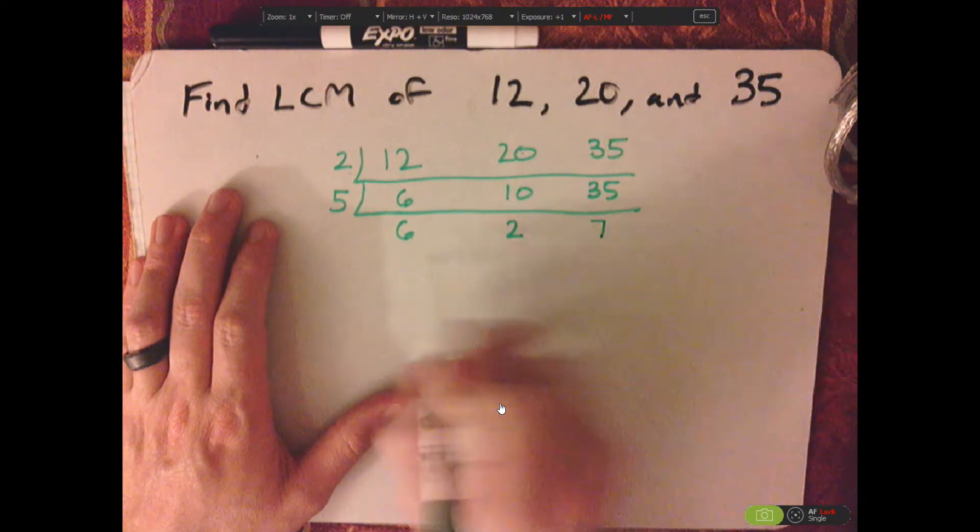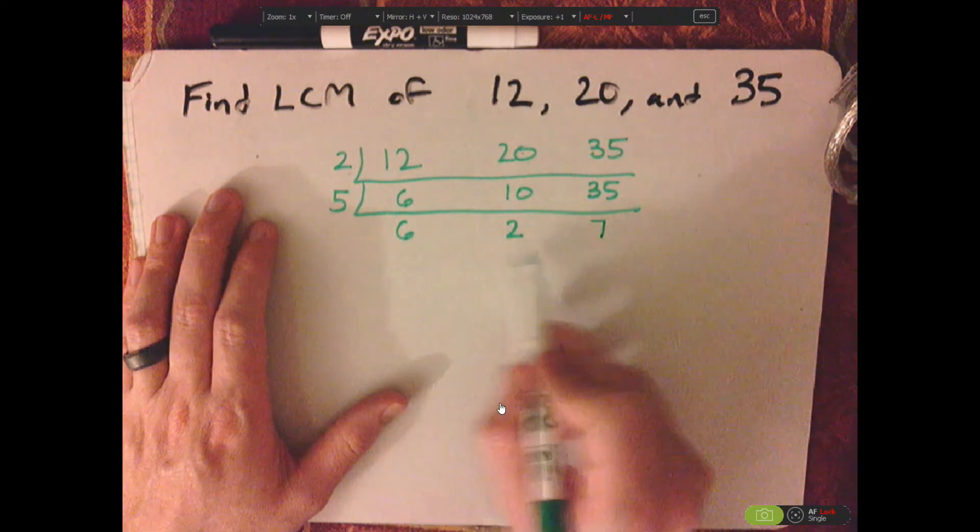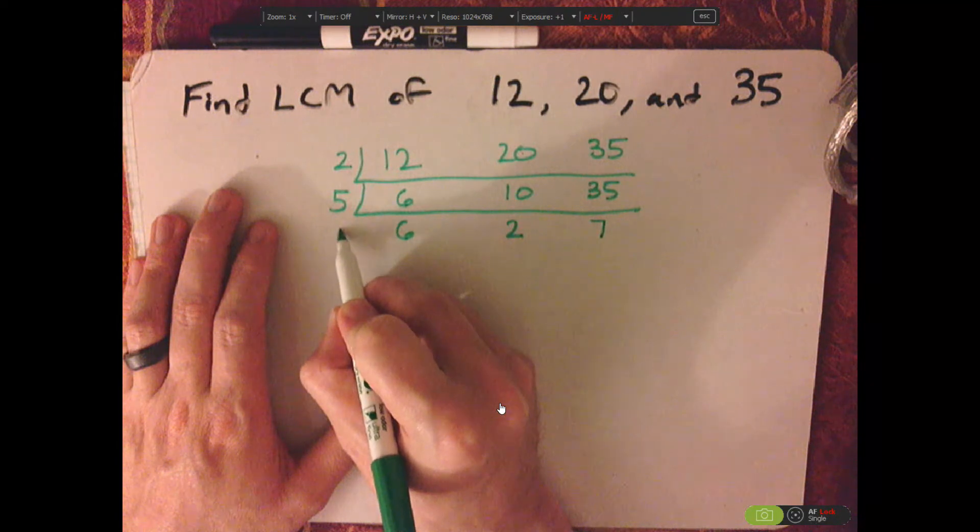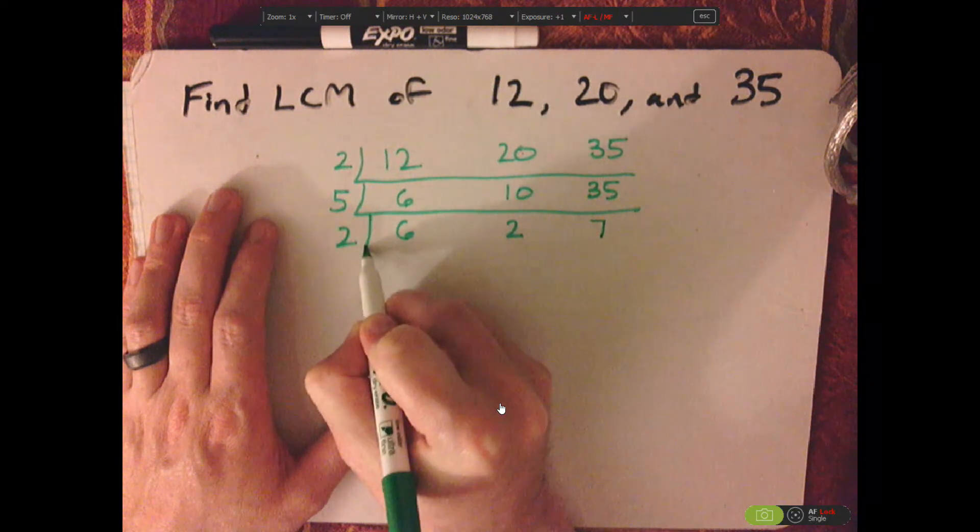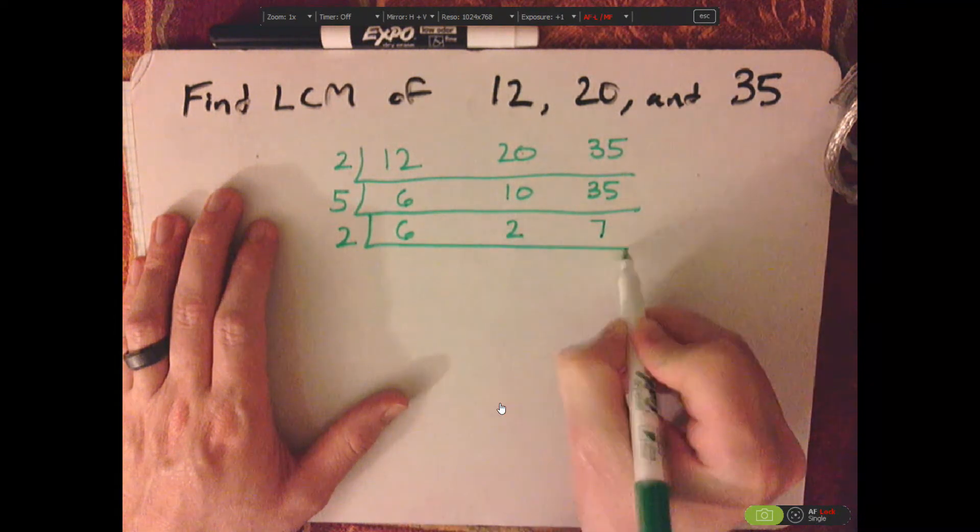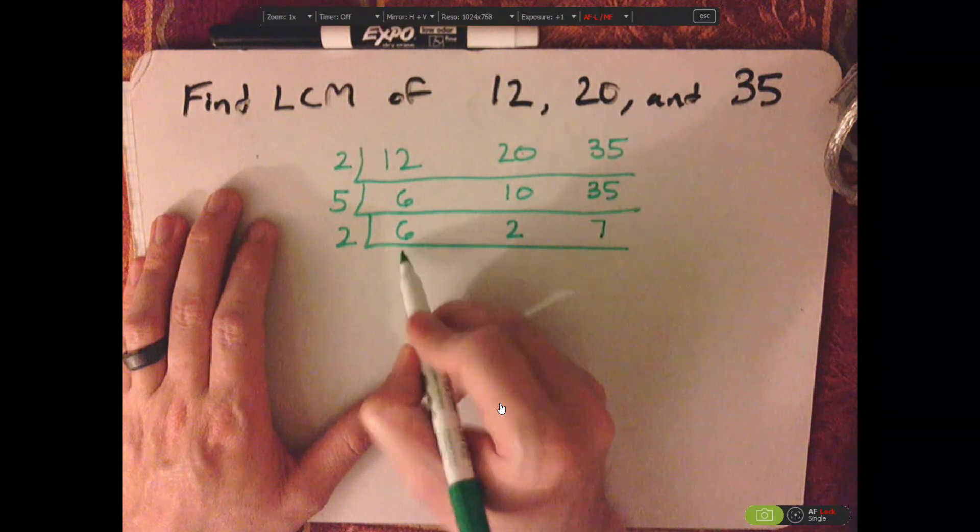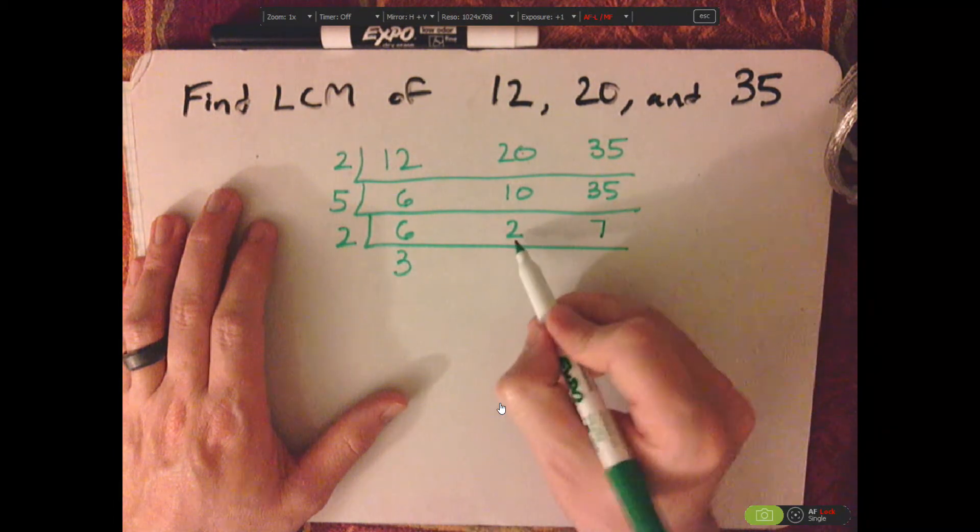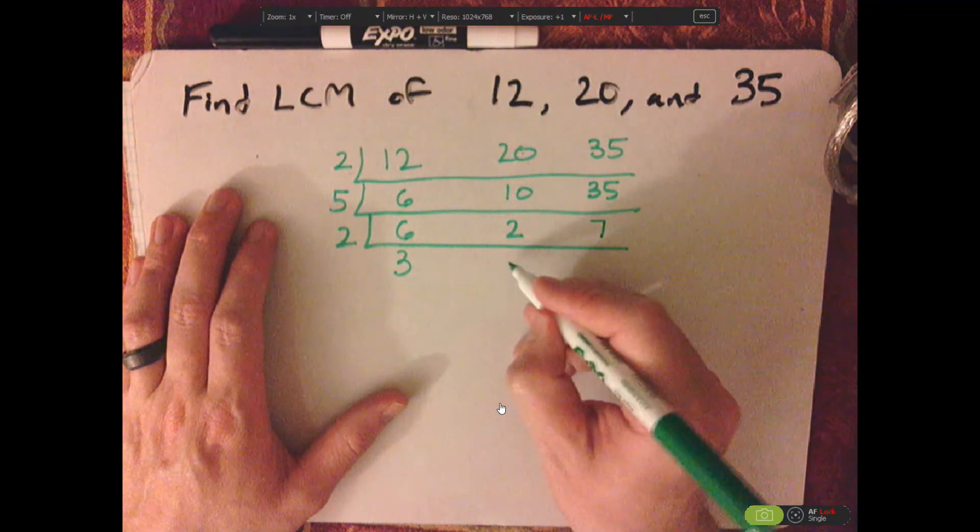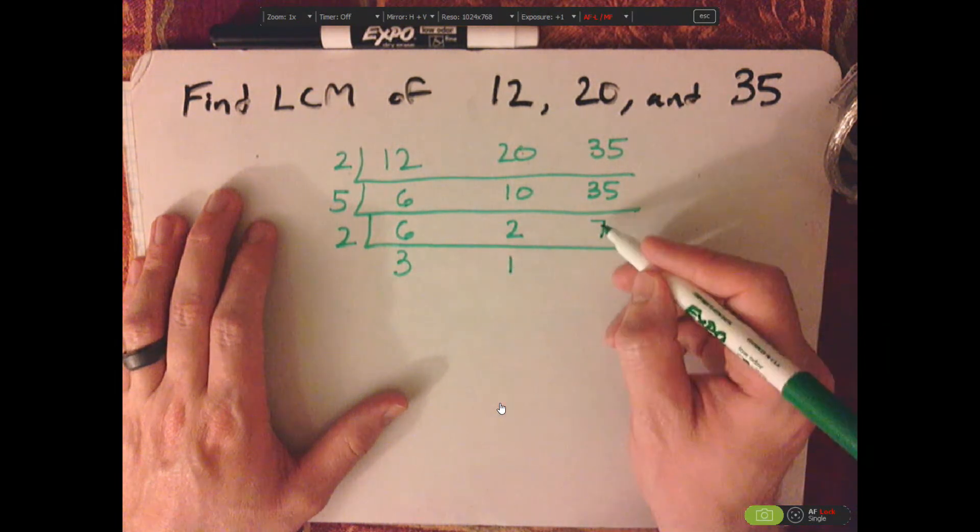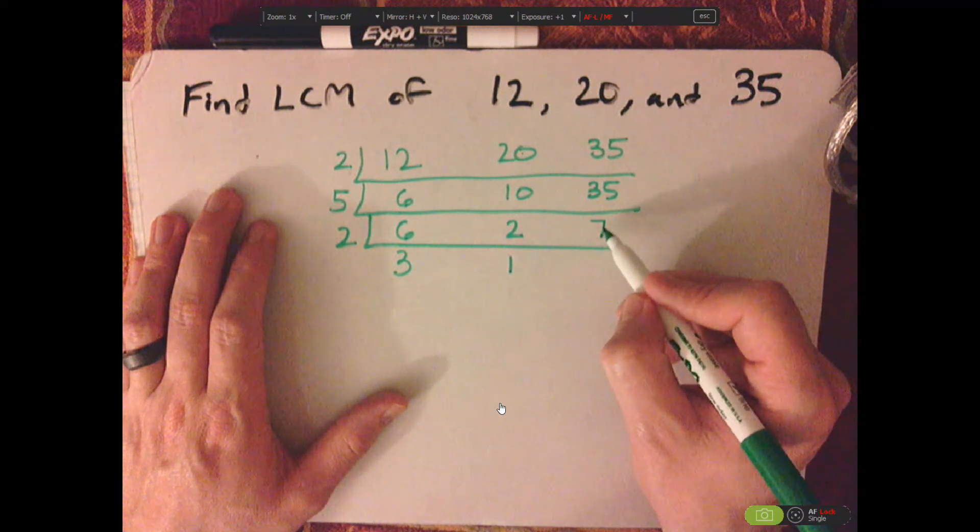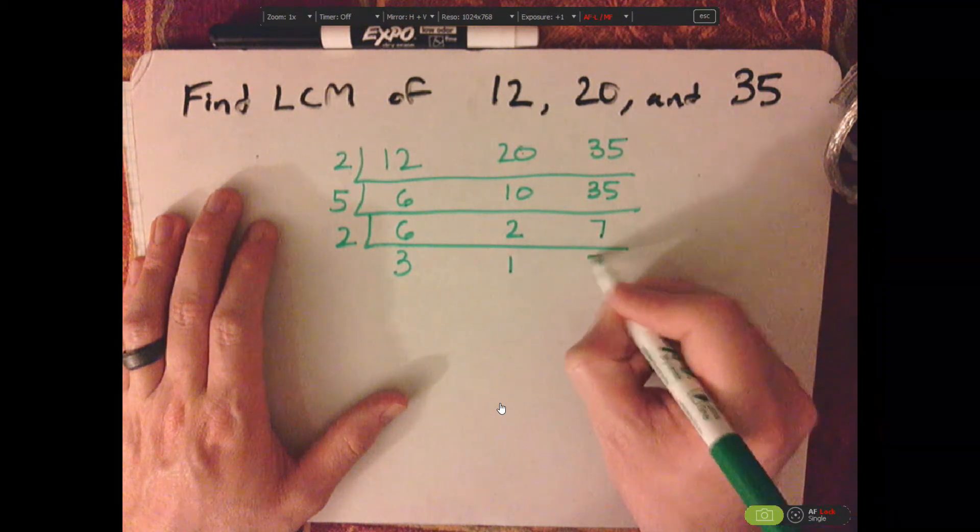Now, I see that these are still divisible by a number, two of them, so I'm going to take the 2. Divide these by 2, so 2 goes into 6 three times. That's 2. 2 goes into 2 once. And then 2 doesn't go into 7, so I'm just going to bring that down.